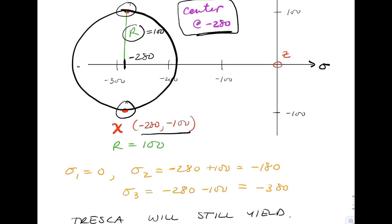Principal stresses are 0, minus 180, and minus 380. Again, that's just center plus r and center minus r. So we've got sigma 2, sigma 3, sigma 1.